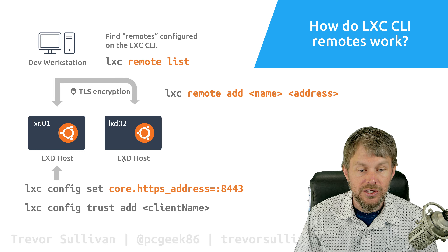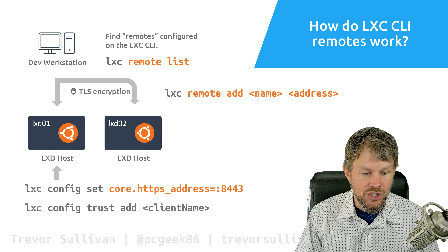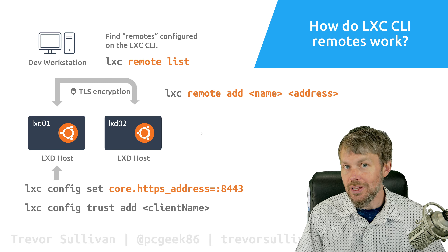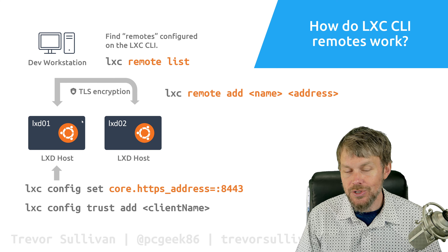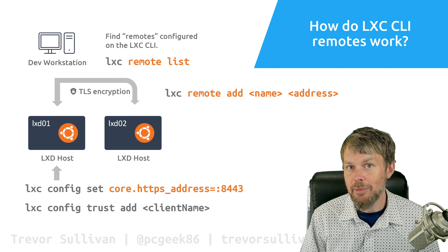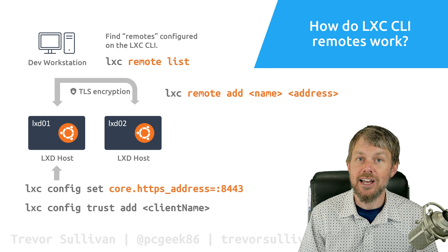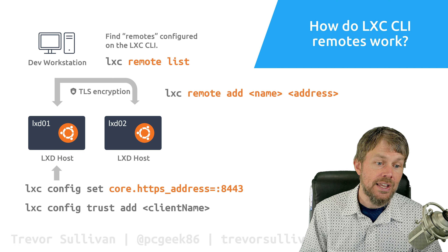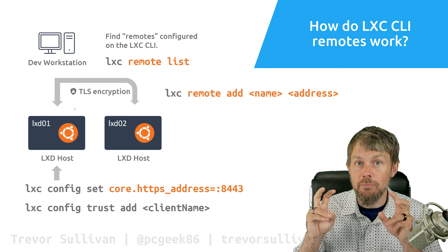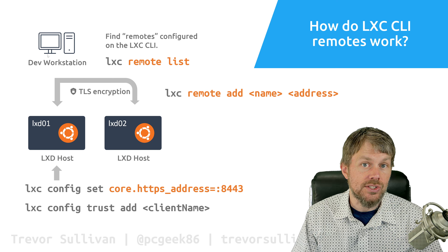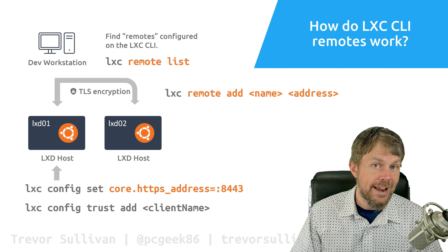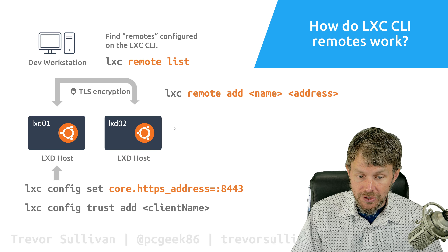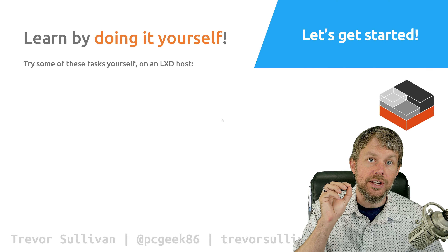If you want to configure additional hosts, you basically just iterate through this process again — set the network listener on the LXD engine, add a client trust, then go to the client and add that as a remote host. It might not be terribly useful if you're just managing a single host — you can just SSH in and run your LXC commands locally. But when you start to scale things out and add more and more LXD hosts to your environment, it's really useful to connect all of those as remotes from your dev workstation and run automation scripts using Bash, PowerShell, or any other language to issue LXC commands to multiple remote LXD servers.